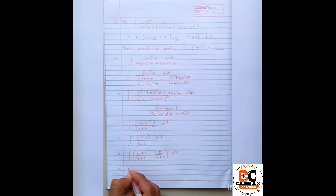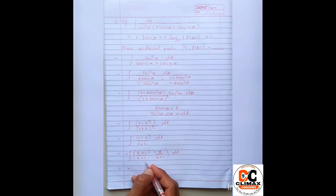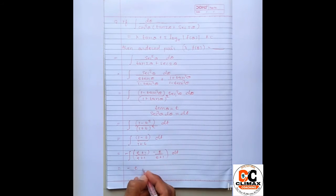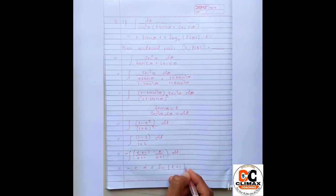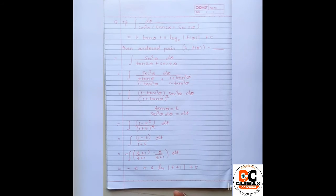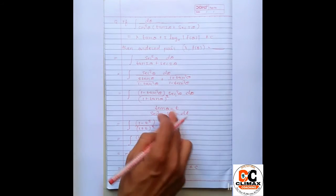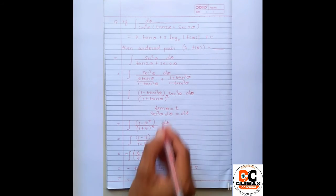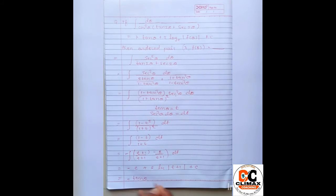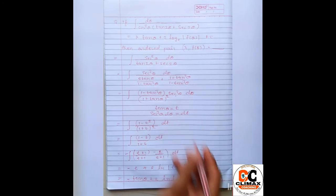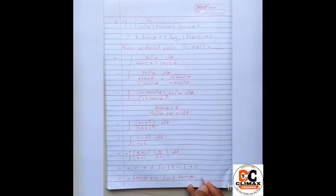negative 1 aur 1 ka integration hota hai T kyonki hum T ke respect mein kar rahe hain to yah minus T aur yah minus minus plus 2 aur iska ajaega ln mod T plus 1 aur plus C is integrating constant. Now jo hamare paas minus T hai wahan par aega minus tan theta plus 2 ln tan theta plus 1 and plus C.